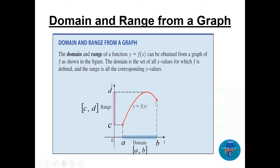Now go back to the same graph and press it on the y-axis. It becomes a straight line. The y values it covers are the range, from c to d — always smaller number to bigger number. If one endpoint is open we say open, if closed we say closed. Just remember the pressing method.